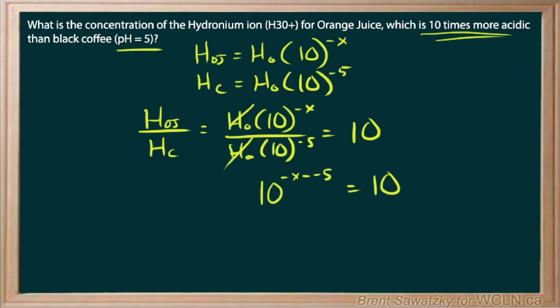Now we can be a little tricky here. Rather than logging, let's just say this is 10 to the 1. And now we have the same base on both sides, so if the exponents are the same, then everything works out.